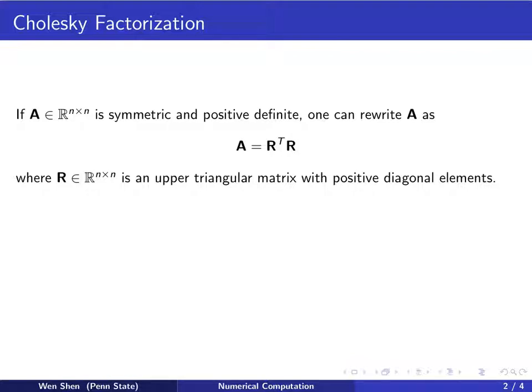Then one can rewrite the A matrix as the product of two matrices R transpose times R. Here the R matrix is a square matrix which is upper triangular and the diagonal elements are all positive.